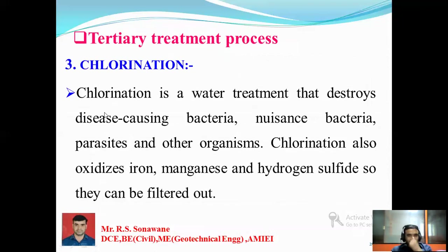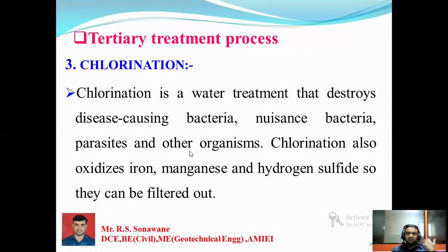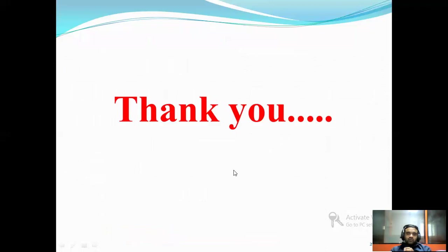The last process in the tertiary treatment plant is chlorination. Chlorination is a water treatment process that destroys disease-causing organisms. Wastewater contains different types of bacteria, viruses, fungi, protozoa, and other organisms — these bacteria, fungi, and protozoa should be killed through the application of chlorine. Chlorination also oxidizes iron, manganese, and hydrogen sulfide so they can be filtered out. Thank you for today's lecture.